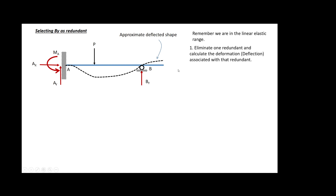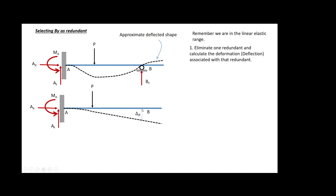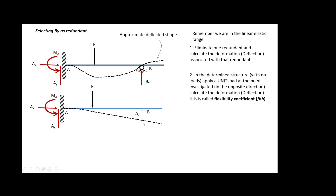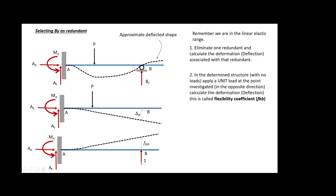We are working in the elastic range — this is not about non-linearity. The first step is to eliminate one redundant, in this case By, and then calculate that deflection. You can use several methods: conjugate beam, virtual work, or deflection tables from the back of the book. In the reduced structure without any external load, we then apply a unit load, which produces what we call a flexibility coefficient.